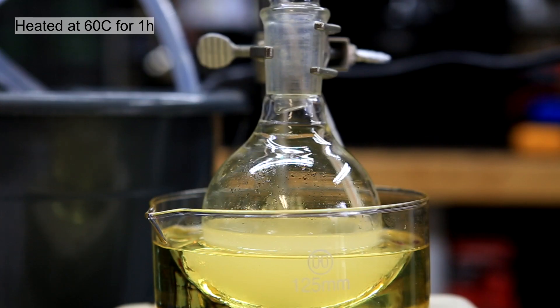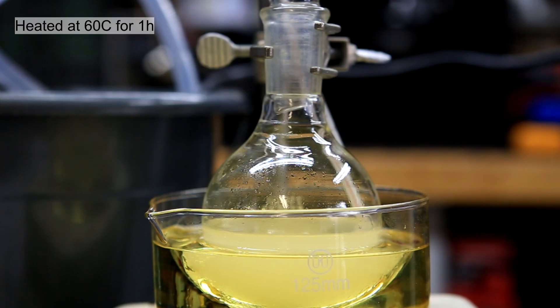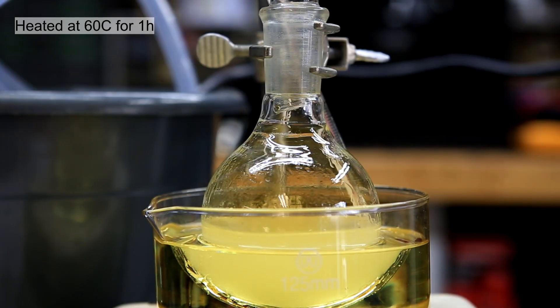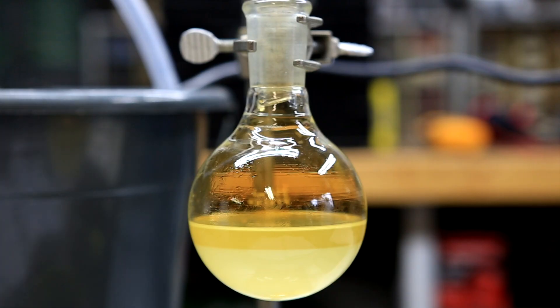After all the benzene had been added, the solution was a faint yellow color and was heated to 60 degrees Celsius for one hour. It is important that the solution is not heated much more than 60 degrees Celsius. After the one hour, the solution was allowed to cool and you can see that two layers have formed.